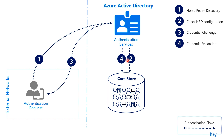Another benefit here is scalability. The authentication services blue box is deployed in data centers all over the world, and requests are routed to an instance close to the HTTP client's location. It is very complex and expensive to have similar geo load balancing behavior with on-premises federation infrastructure.